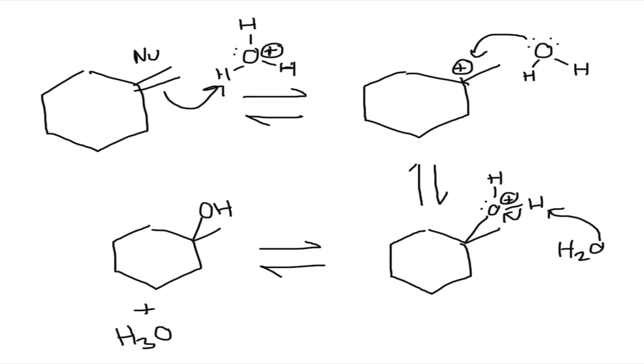Then another water molecule, because you have a lot of water molecules in the solution, is going to come in and take that hydrogen off and the electrons get pushed back onto that oxygen to make a neutral molecule. Your end result is going to be an alcohol and H3O+.